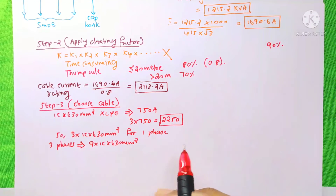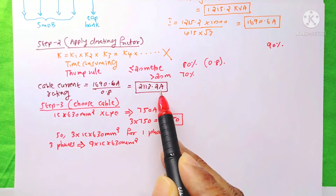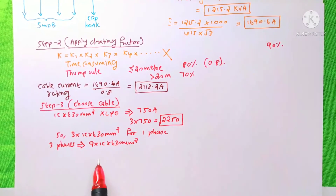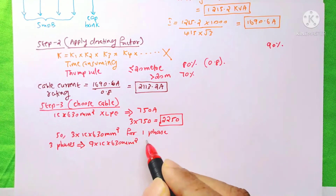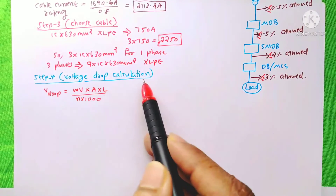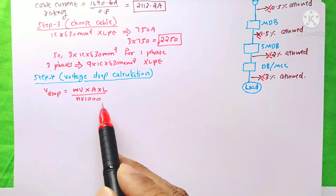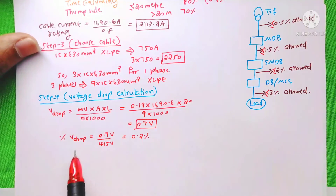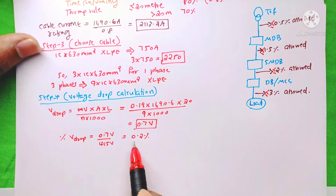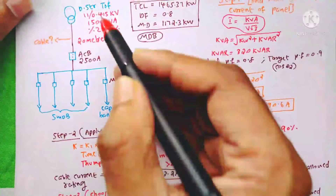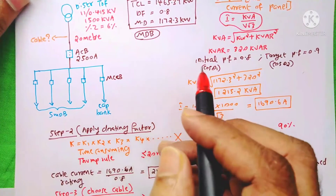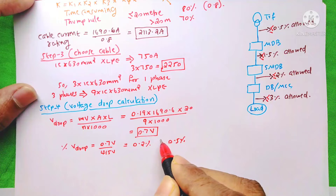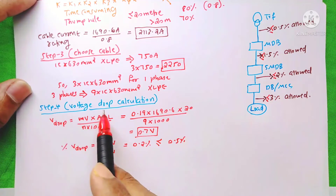Note that 2113.2 A passes through one phase, so for one phase we need 3 runs of 1-core 630 mm² cable. For three phases, 9 × 1-core 630 mm² XLPE cables are required. Voltage drop = (mV/A/m × length) / (n × 1000). Substituting all values gives 0.7 V, which is 0.2% of system voltage.